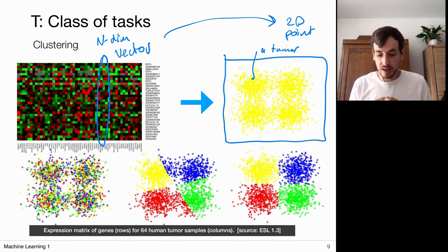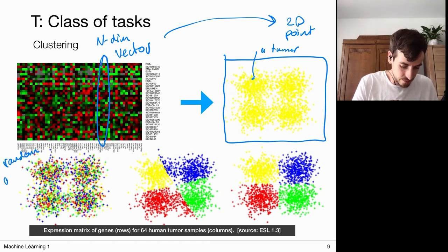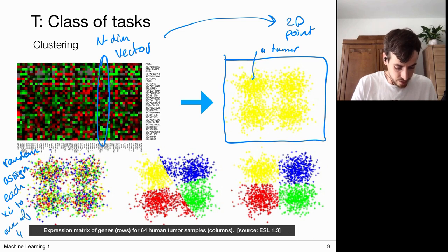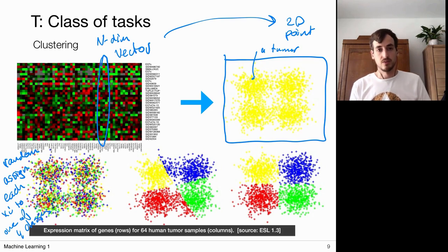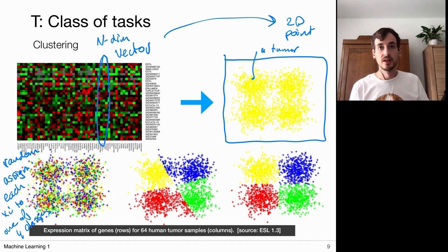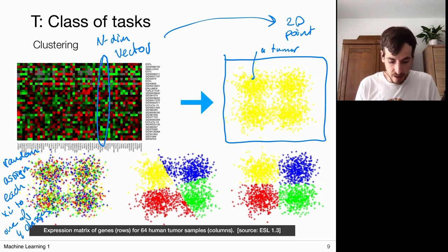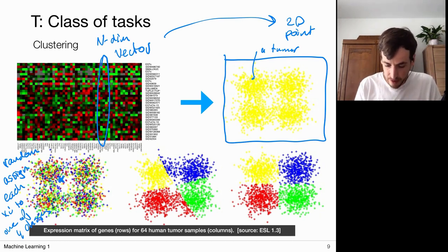Let's say there are four classes, so we want to divide all these tumors into four categories. We randomly assign each xᵢ to one of four classes — each color represents one class — then we look at the mean vector value of each class, because that summarizes what a tumor within this class looks like. If we compute the mean over all the yellow points it's probably close to the origin; the blue, red, and green means are elsewhere. These crosses are what I call the cluster means μᵢ.